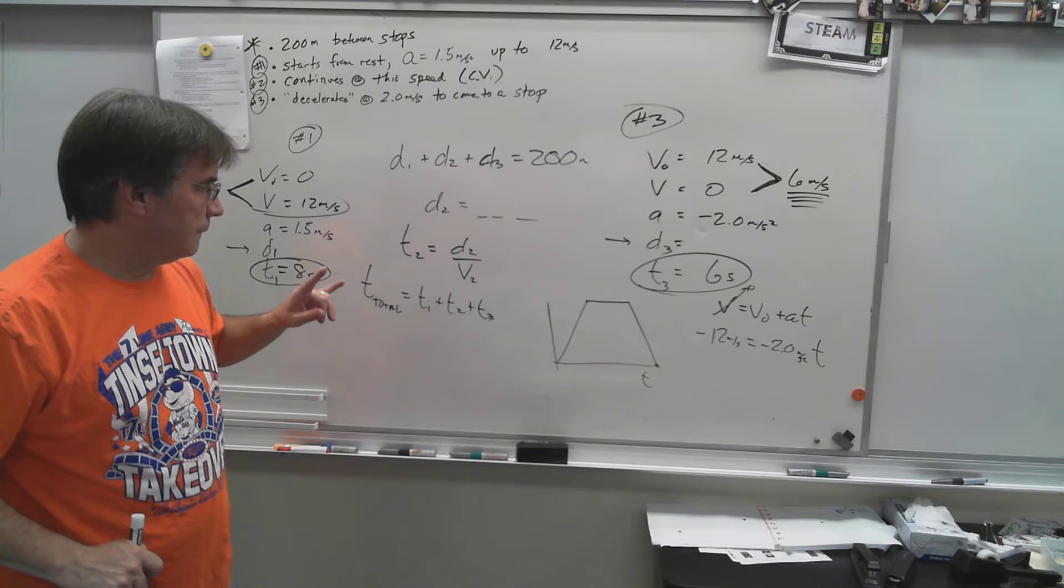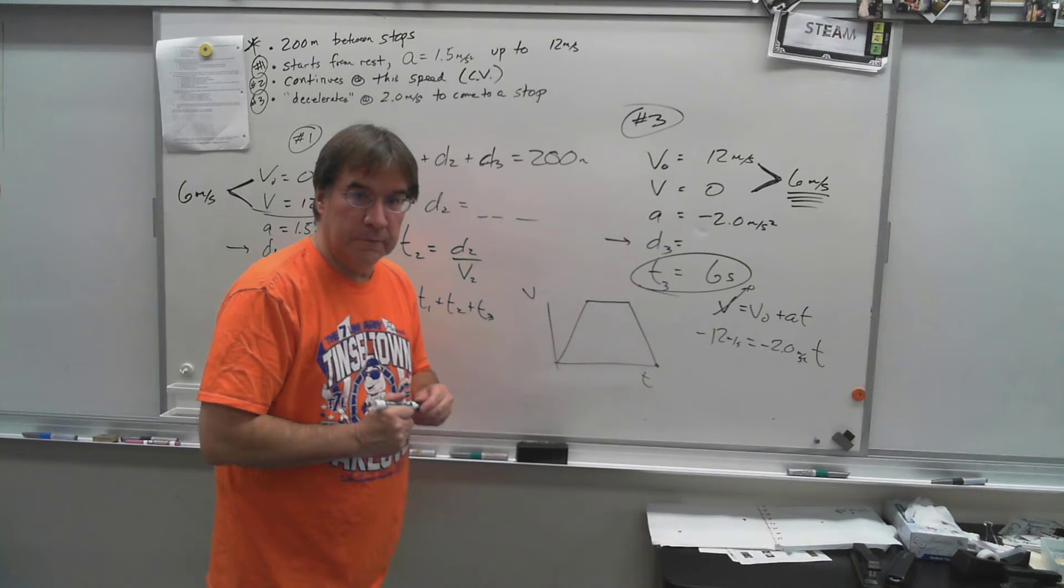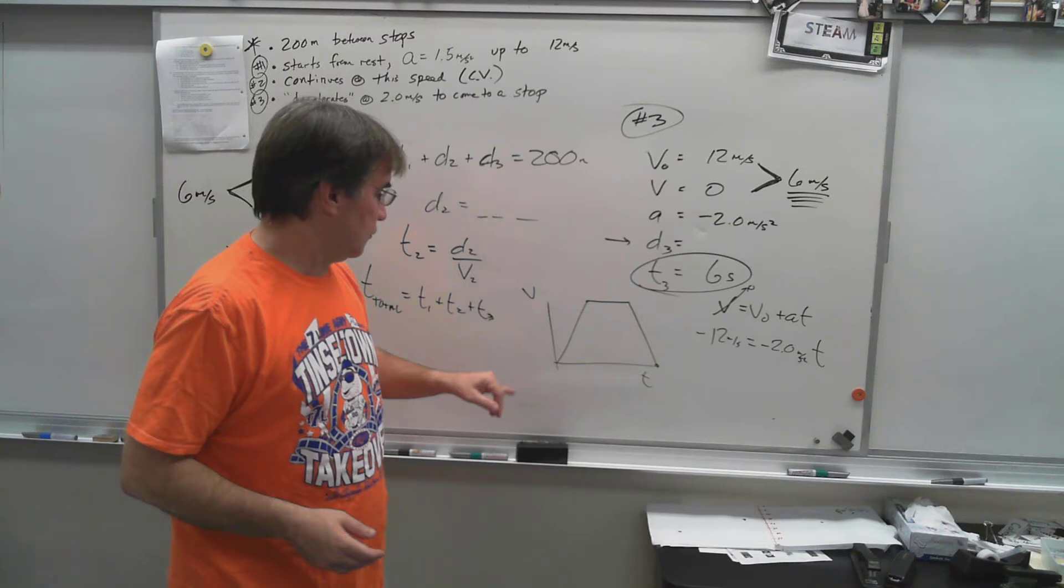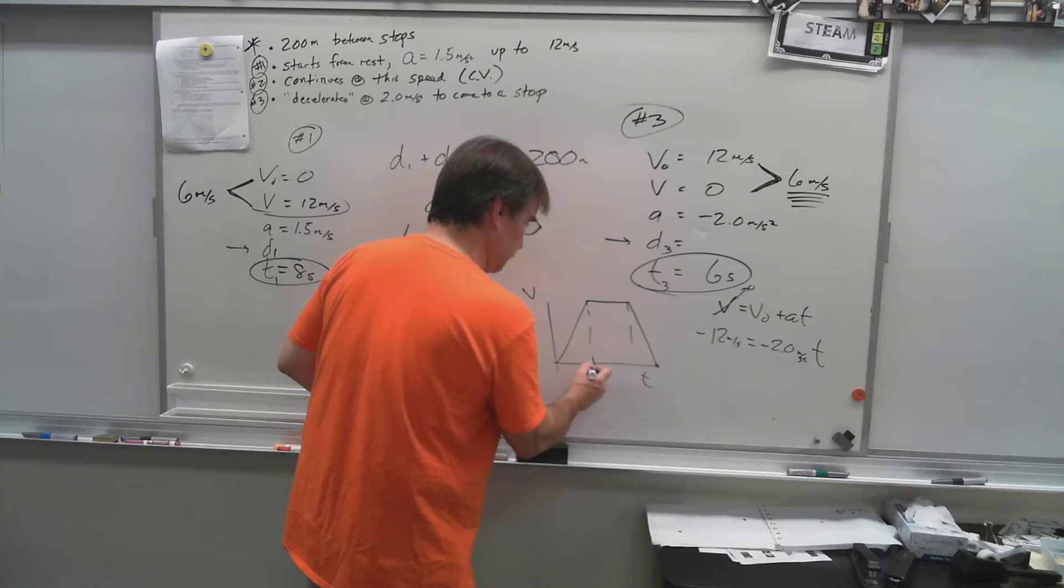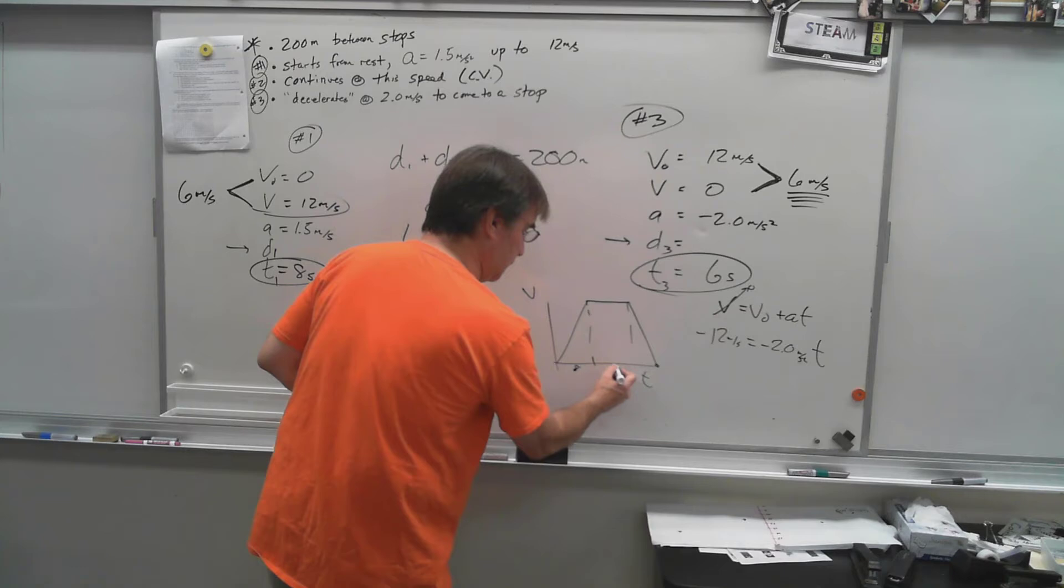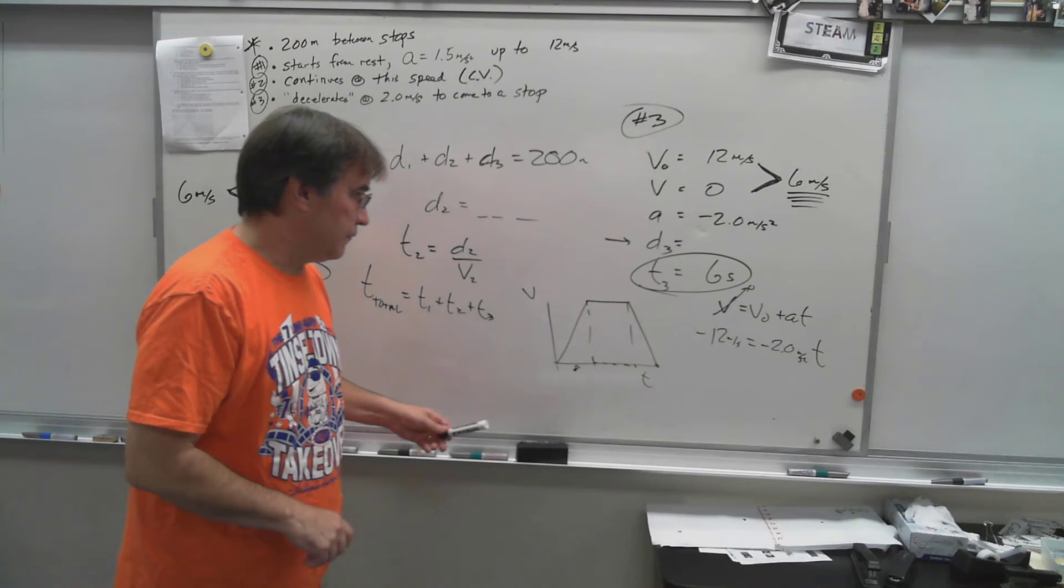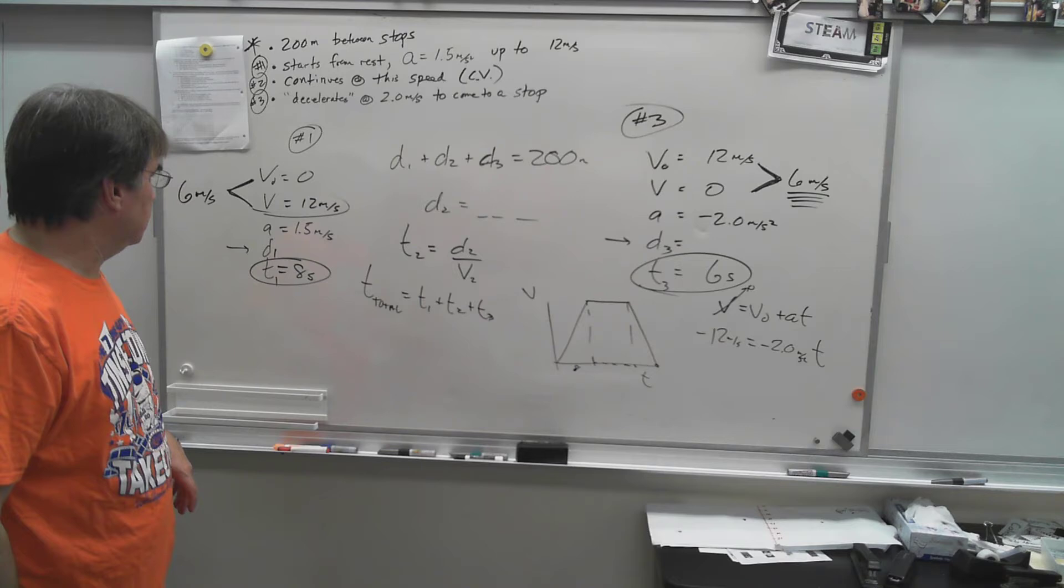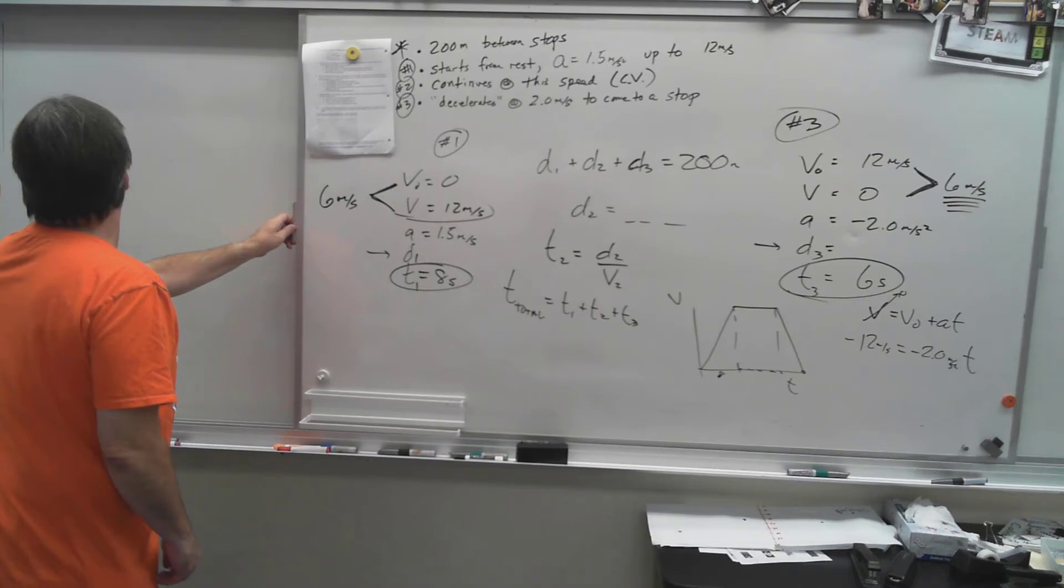So just subtract off d1 and d3, whatever those were, from 200 and you'll get an answer for d2. Once you have d2, you can go get t2 because it'll just be that d2 divided by v2, which is 12 meters per second. And then finally, your total time is t1 plus t2 plus t3. As I recall, t2 doesn't work out to a nice pretty even number, has some decimal. And then when you graph, do it on that grid or somewhere on graph paper.